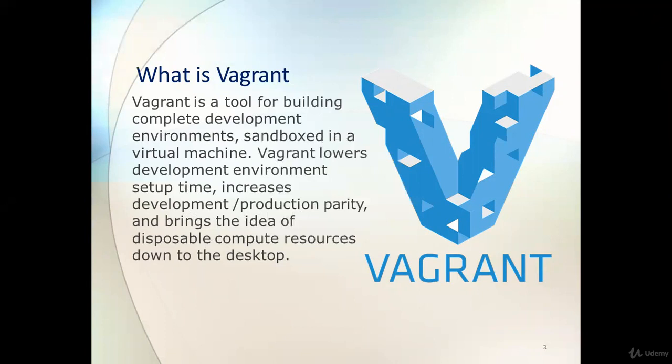An interesting thing about Vagrant is that it has its own cloud, from where we can get ready-made images. We do not need time to install the operating system because pre-installed OS images are available on the Vagrant Cloud. For example, CentOS 7, Ubuntu, or any image with installed software like Apache — all these kinds of images are available on Vagrant Cloud.